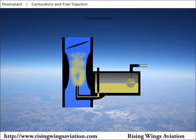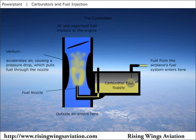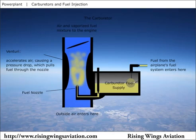A carburetor contains an open pipe with a shaped restriction, or a venturi, inside. The venturi momentarily accelerates the intake air, lowering its pressure and temperature. A fuel nozzle placed inside the venturi allows the lowered air pressure to pull fuel through the nozzle and into the intake air. The sprayed fuel quickly vaporizes in the air.